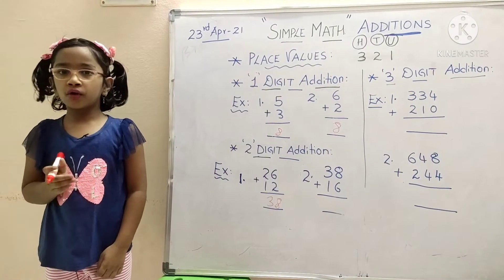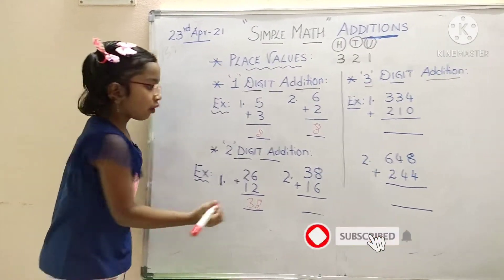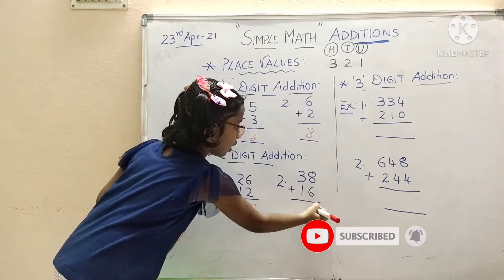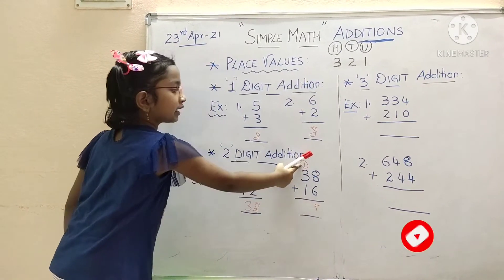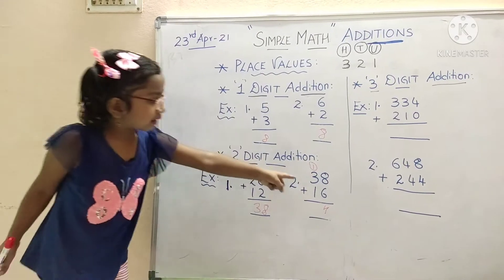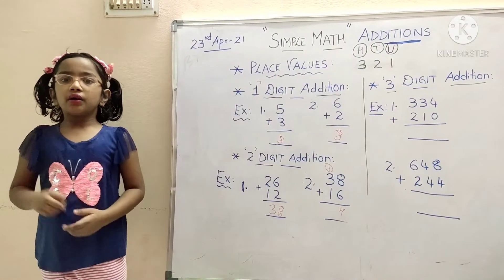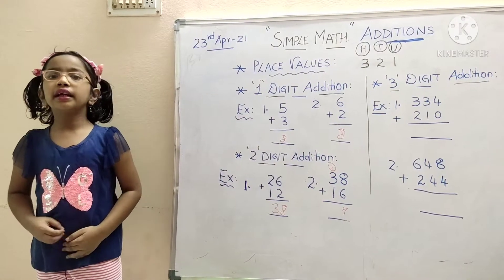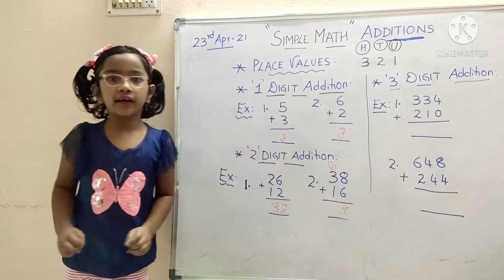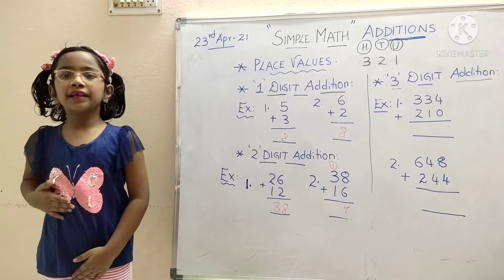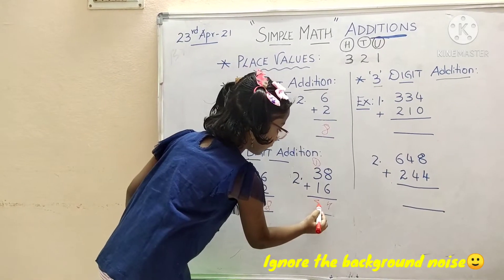Thirty-eight plus sixteen: eight plus six — after eight: nine, ten, eleven, twelve, thirteen, fourteen. The answer is fourteen. We cannot write fourteen in the units place directly — four in units place, one in tens place. That is known as carry over. Next, tens: three plus one — three in mind, one in hand — four. There is one more carry over: four plus one equals five. The answer is 54.